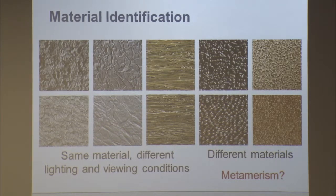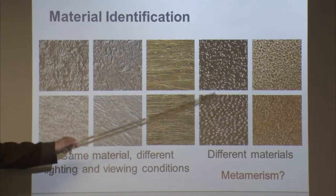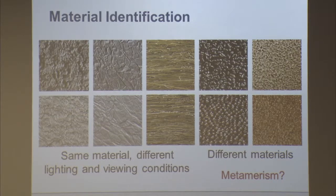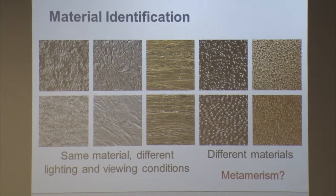For material identification, here are three examples from the CUReT database, which has been around for a while. These are the same material with different lighting and different viewing orientation. As I tried to study similarity, I looked for textures that look the same but are different materials — this was the best I could do, and they are quite similar but not identical. This raises an interesting question analogous to metamerism in color: can we find two different materials that appear the same when photographed? With color it is very difficult, and without color it's easy to fool the eye. This is encouraging because it tells us visual texture contains a lot of information about material.